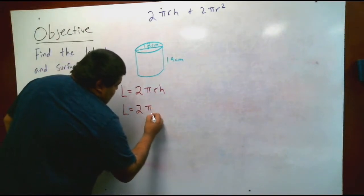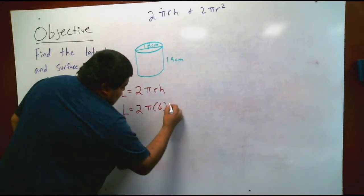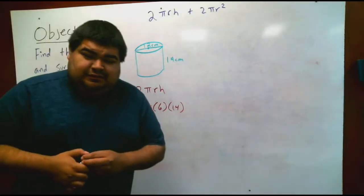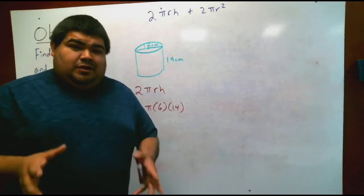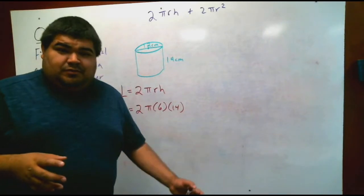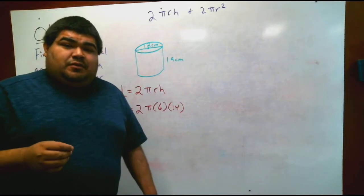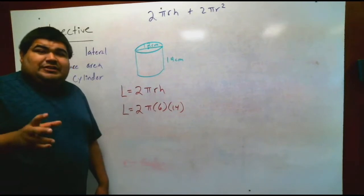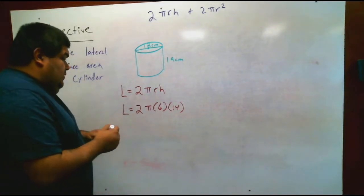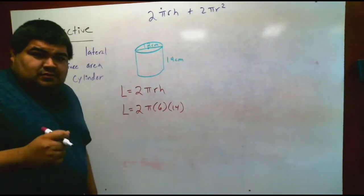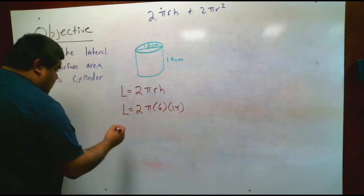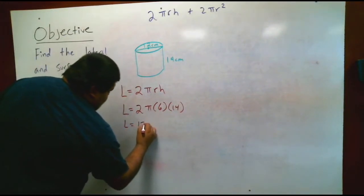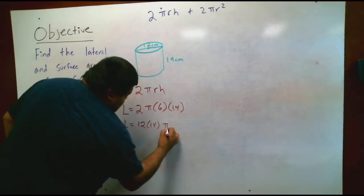So we have 2 times pi times radius 6 times height 14. You can literally plug this into a calculator on your phone or an actual calculator to get your answer. I'm going to do it old-fashioned: I'll multiply 2 times 6, which is 12, times 14, times pi.